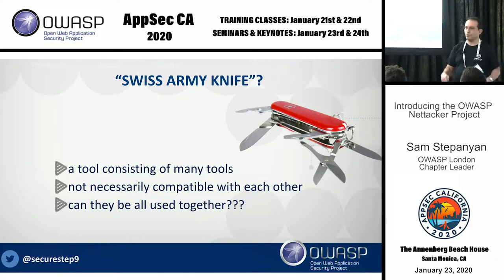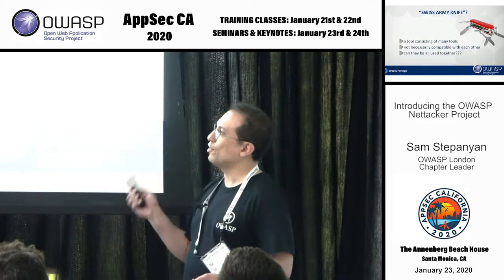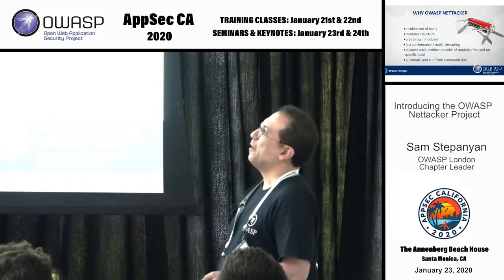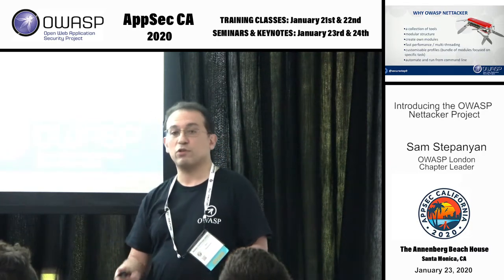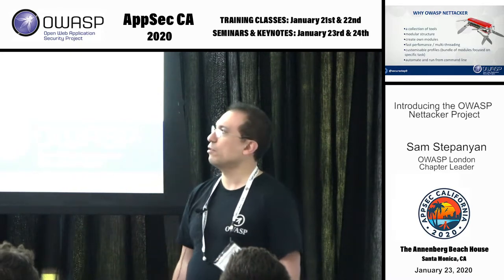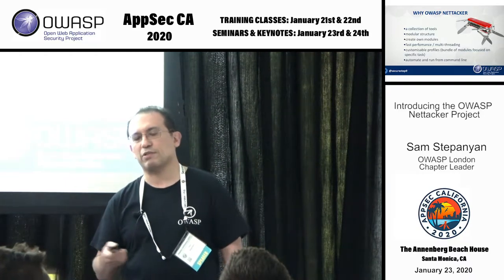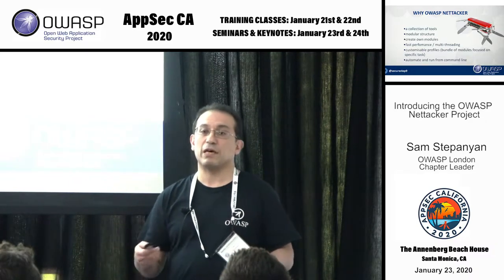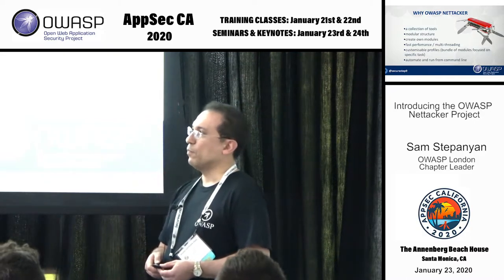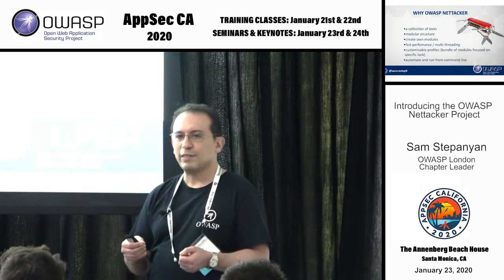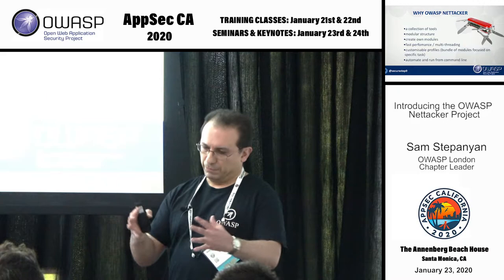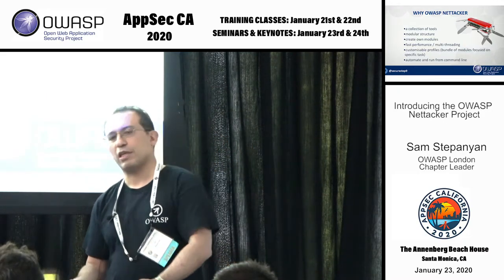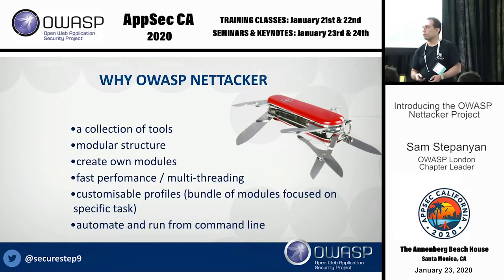Think of NetAttacker as a Swiss Army knife — it's a tool which consists of many tools that aren't necessarily compatible with each other, but can all be used together. It has a modular structure with lots of modules, and it's pretty simple to write your own module — I actually wrote my own module for a Citrix vulnerability, which I'll show later. It's quite fast, using Python's multi-threading to speed up scanning tasks significantly. You can also create custom profiles, grouping modules based on a particular task — for example, all information gathering tools together, or all brute-forcing tools together.